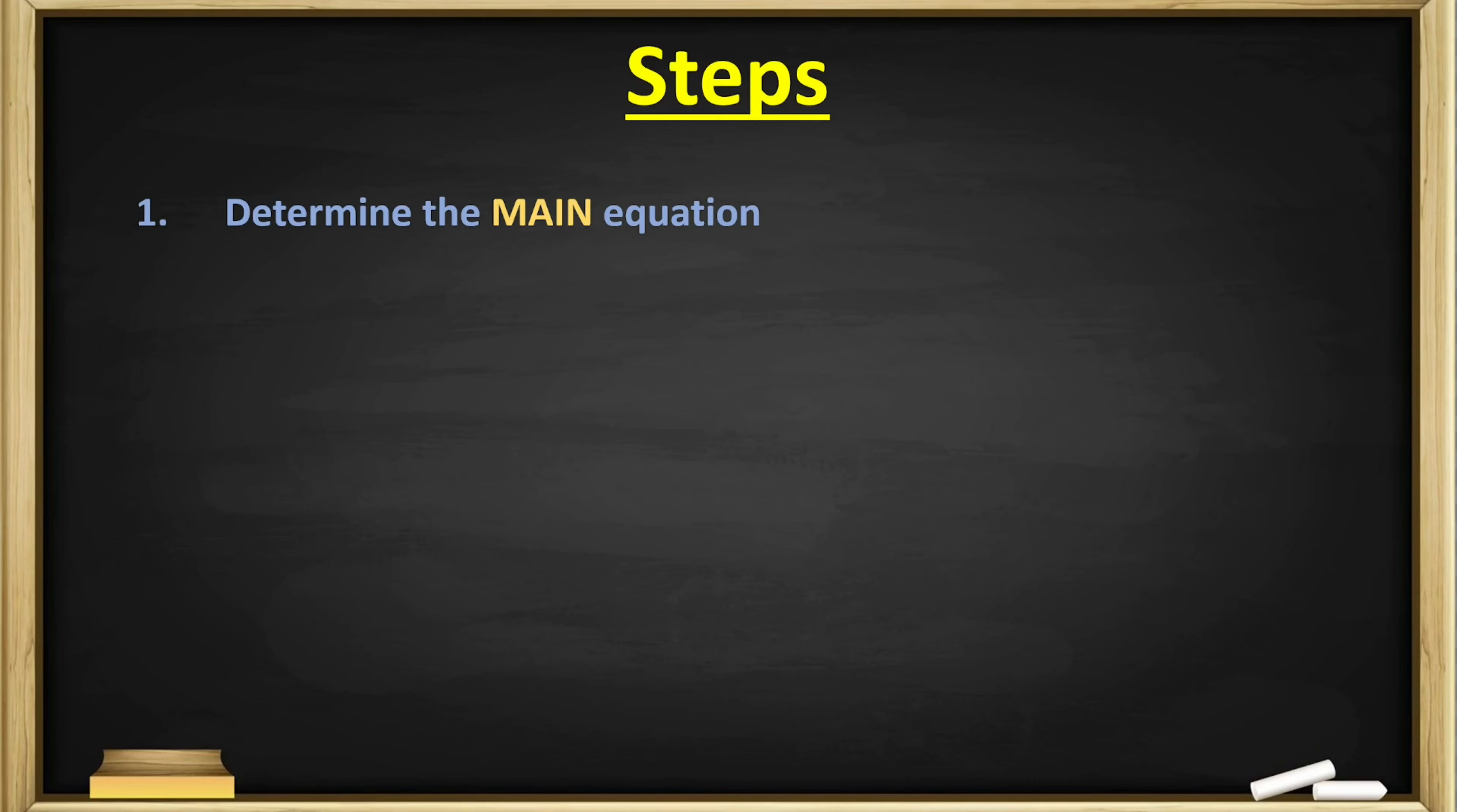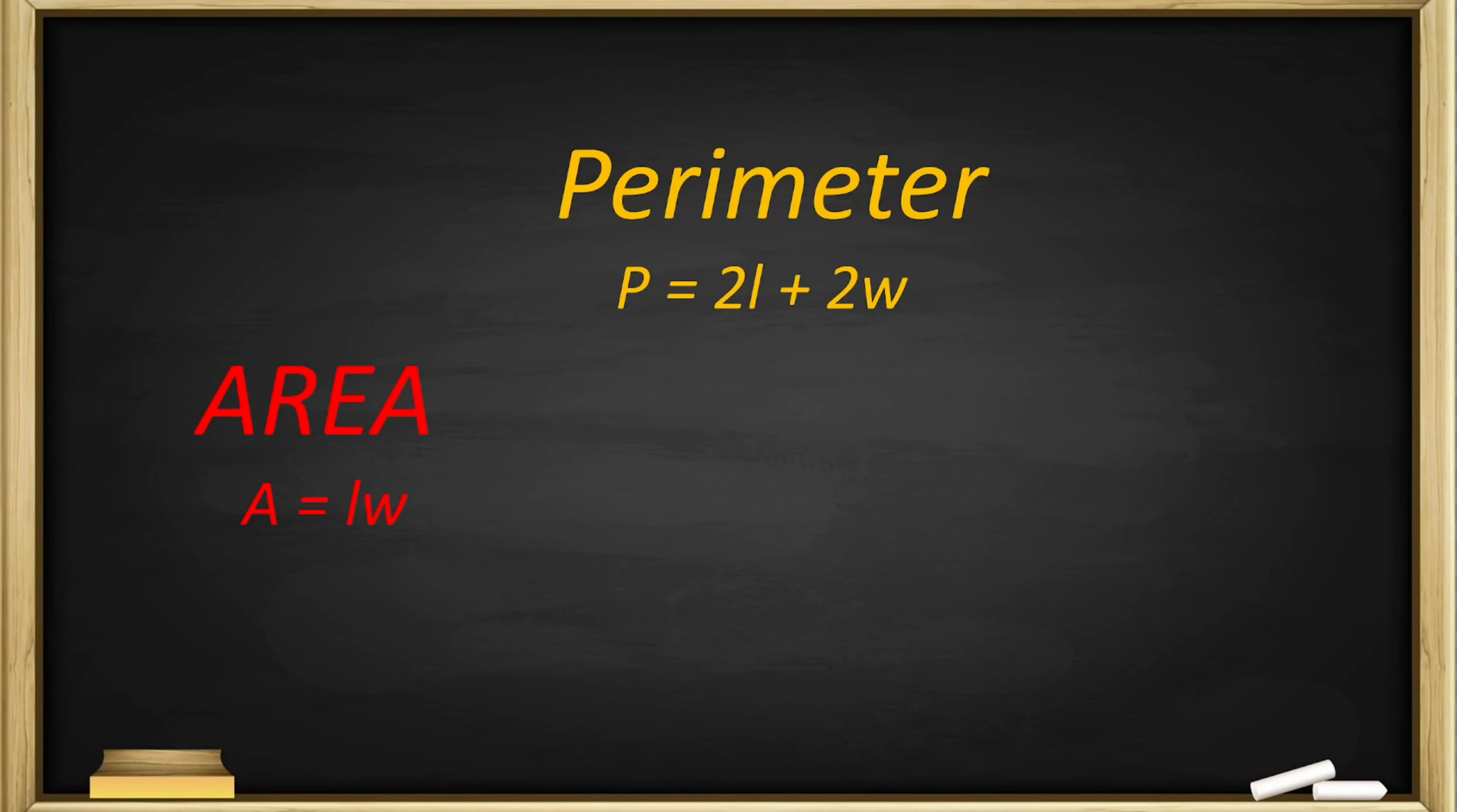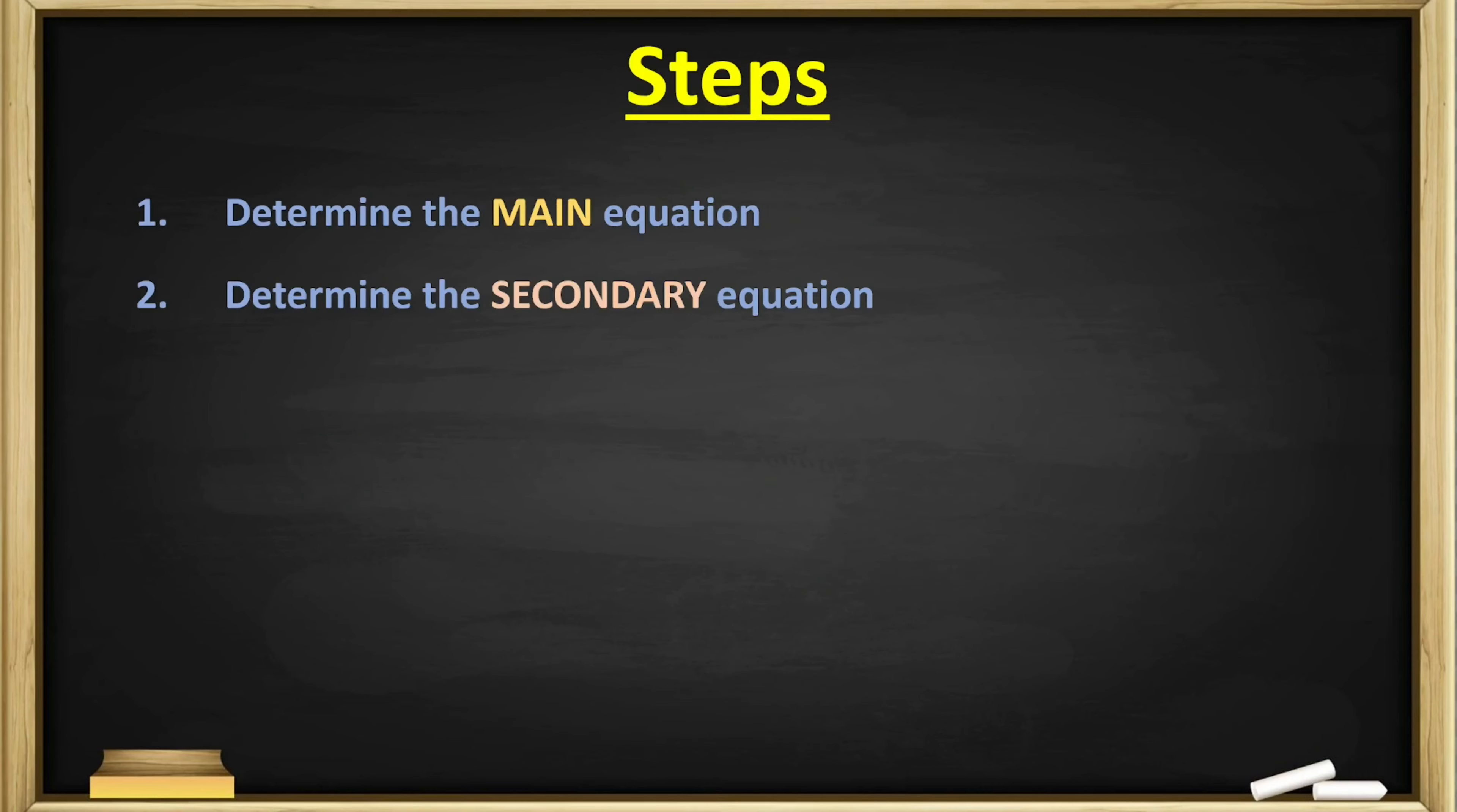The first step in doing optimization questions is to determine your main equation, and this depends on what we're trying to maximize or minimize. It could be the area, in which the equation becomes A = lw. You could be maximizing or minimizing the perimeter, or you could be minimizing or maximizing the distance, volume, and so forth.